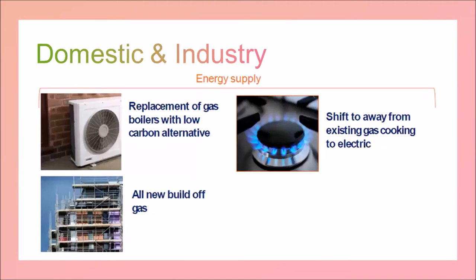The other side of the coin is energy supply. The model advocates that all gas boilers are replaced with low carbon alternatives — for example, air source heat pumps — and that all new build is off the gas grid. The government has a policy that by 2025 no new properties will be connected to the gas grid. A small measure is also moving gas cooking to electric.